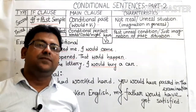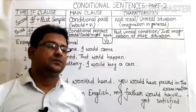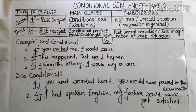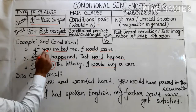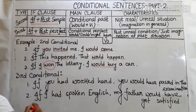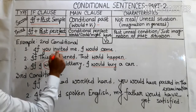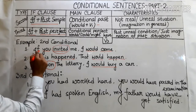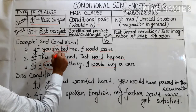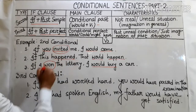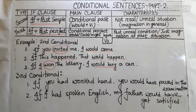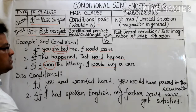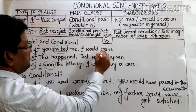I have shown three examples for the second conditional. In the first example: 'If you invited me, I would come.' Here I used 'invited' in the if-clause — that is the past form of the verb. In the main clause I used 'would' plus the base form of the verb.